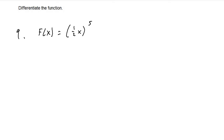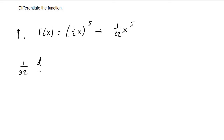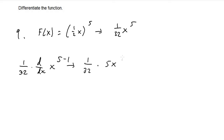For number 9, f of x equals one-half x, the entire thing raised to the fifth power. Distributing the exponent, one-half to the fifth is one over 32, so we get one over 32 times x to the fifth. Then one over 32 is a constant, so we apply the power rule to x to the fifth: bring the 5 down, subtract by 1, giving 5 over 32 x to the fourth. That's f prime of x.